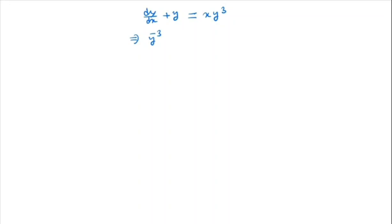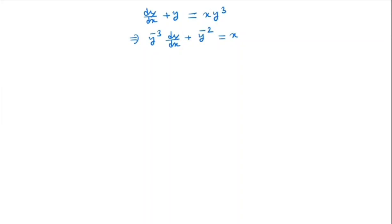So we have y to the power minus 3 · dy/dx + y to the power minus 2 = x. In the next step we will make a transformation of variable, setting y to the power minus 2 equal to a new variable.